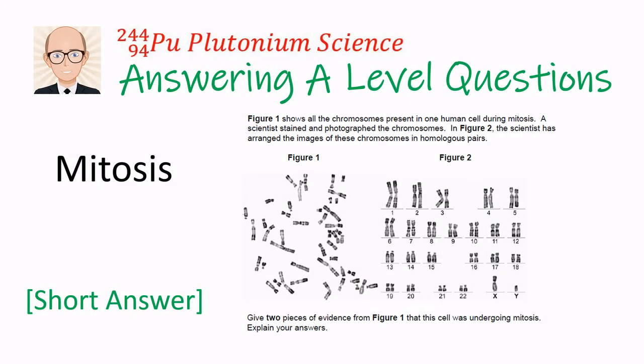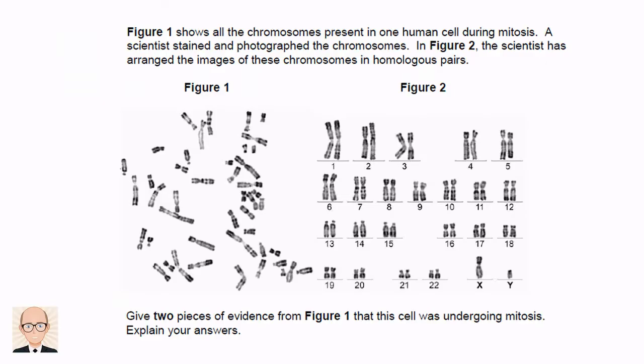Welcome to this exam preparation video where I'll show you how to answer a question on mitosis. The question shows us an image of some chromosomes from a human cell during mitosis. They've been stained and arranged into their homologous pairs. We need to give two pieces of evidence that this cell was undergoing mitosis. This is for two marks.